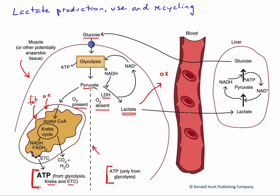Lactate can also be taken up by the bloodstream and delivered to the liver, where it is converted back to pyruvate and then glucose. That glucose can then leave the liver, enter the bloodstream, end up back in circulation, and be taken up for oxidative use or for storage as glycogen in muscle tissues. That whole process of lactate being produced and then recycled back to glucose for reuse or storage is called the Cori cycle.